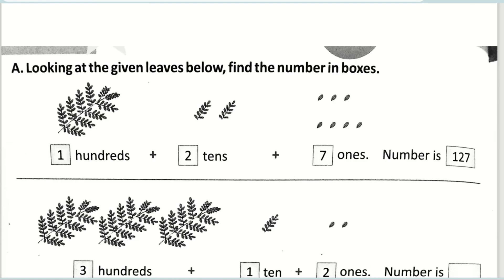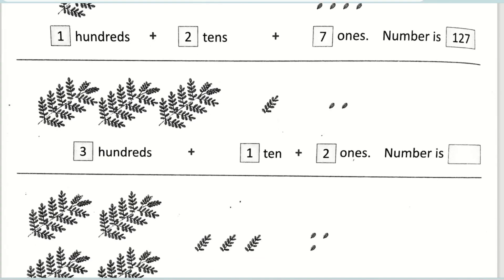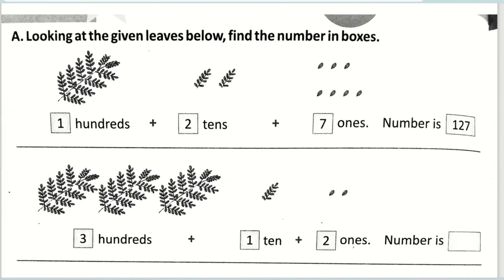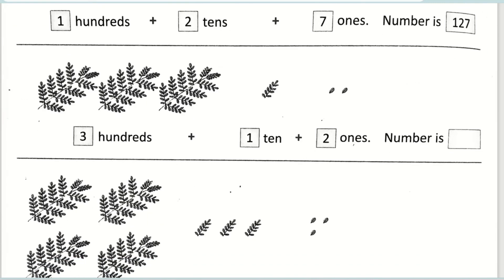Hello everyone, how are you all doing today? So today we are going to do a worksheet. The first one is looking at the given leaves below — find the number in boxes. The first one is already done for you, so we'll go for the next one. It's three hundredths, one ten, and two ones, which gives you three hundred twelve.